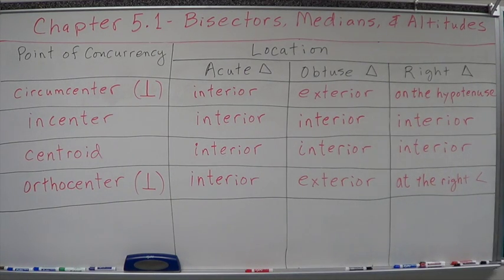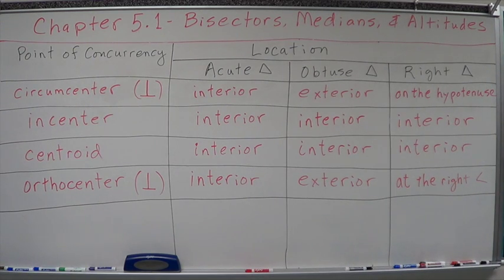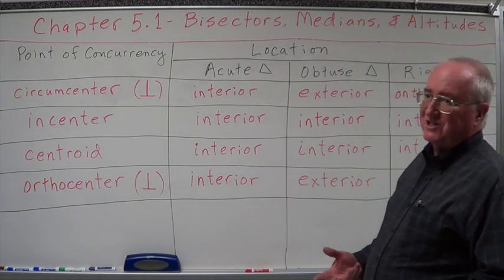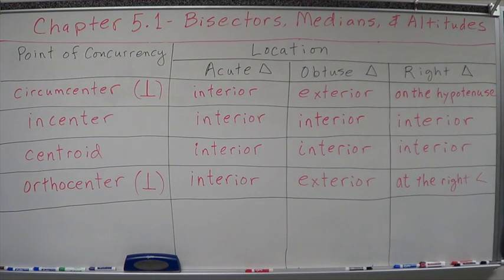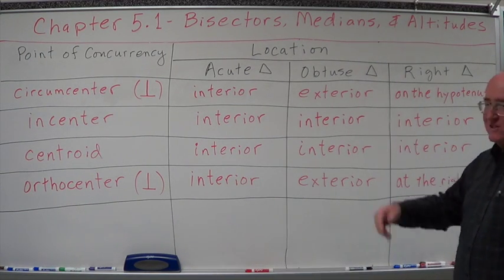So what happens is this thing moves from acute to obtuse — it's moving from interior to exterior, and it goes through the hypotenuse to get there. And this one's moving from interior to exterior through the right angle. Is that important for high school? If you're a civil engineer, mechanical engineer, aerospace, and so forth — you're looking at movement, micro-geometry, micro-physics, quantum physics. You want to know how that stuff moves and what those points of concurrency are.